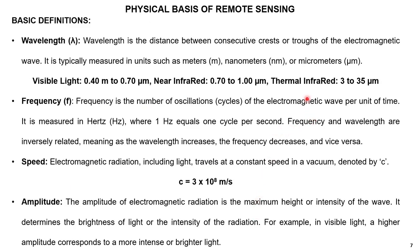Wavelength is the distance between two consecutive crests or troughs, measured in meters, nanometers, or micrometers; in remote sensing we typically use nanometers or micrometers. Frequency is the number of oscillations of the electromagnetic wave per unit time, measured in hertz. Electromagnetic radiation travels at the speed of light in vacuum: 3×10⁸ m/s. Amplitude is the maximum height or intensity of the wave and determines the brightness of the light.